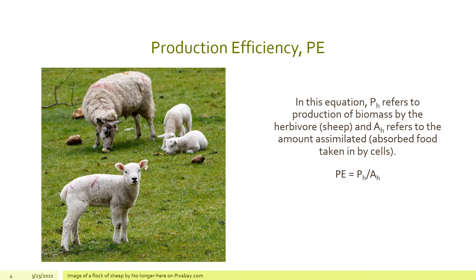The remaining assimilated food is then used for growth. The sheep takes the energy in its cells and uses it to build new biomass — new hooves, tissue, flesh, fluffy wool, or even a new baby sheep. A sheep farmer wants more sheep biomass at the end of each season in both size and number, indicating a healthy flock. This increase in herbivore biomass is known as production, P sub H.